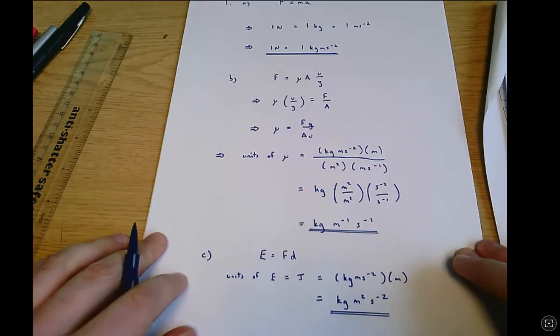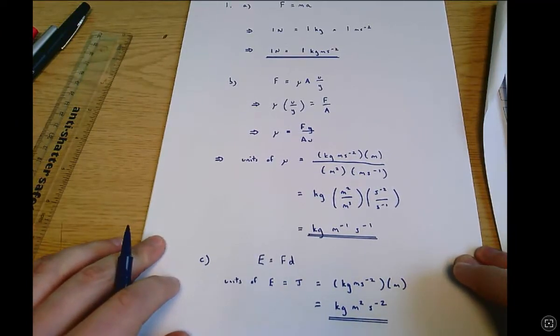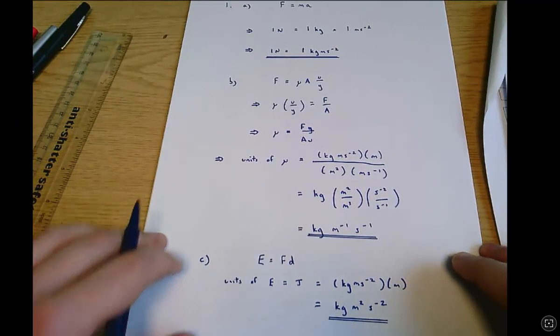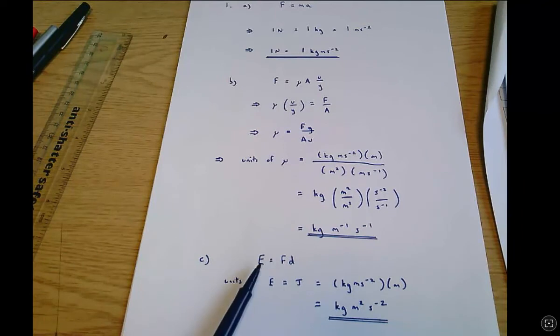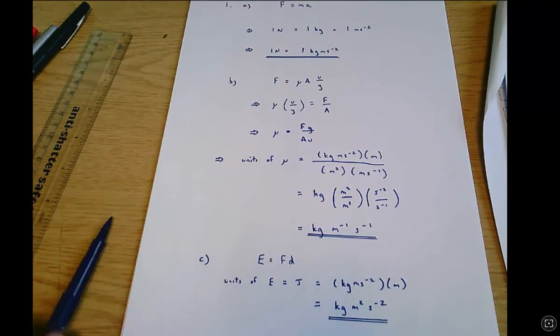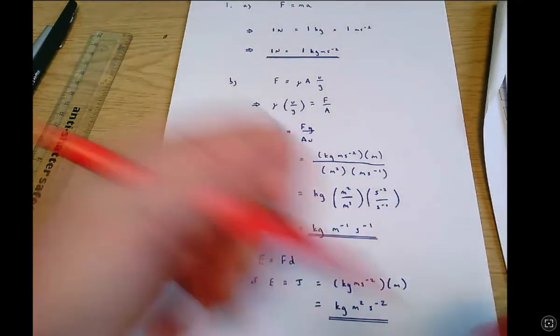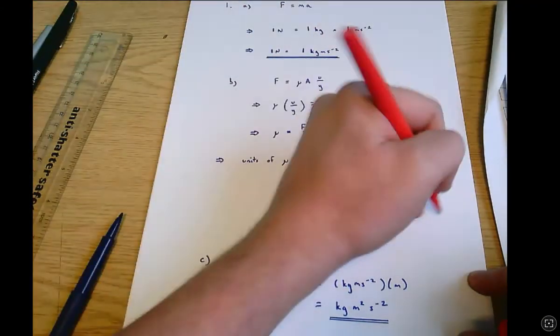One student in the exam had quite a nice approach to part C instead of using work done equals force times distance you can use any equation involving energy and you can if you like use Einstein's equation E equals MC squared.